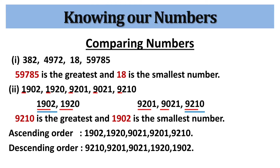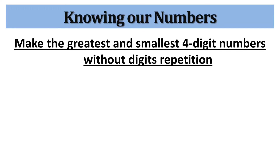Now let's see how to make the greatest and smallest four-digit numbers without digit repetition. We have four digits: 5, 7, 3, 9. Using these digits, we want to make the greatest and smallest four-digit numbers such that no digit is repeated. For the greatest number, write the digits in descending order: 9753. Thus the greatest number is 9753. For the smallest number, write the digits in ascending order: 3579.